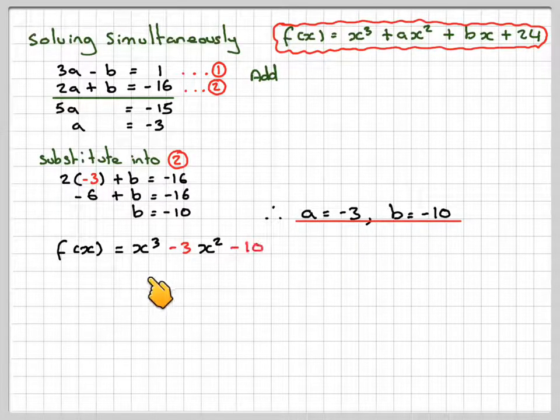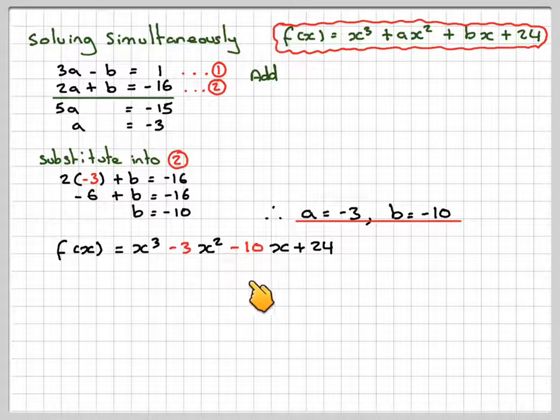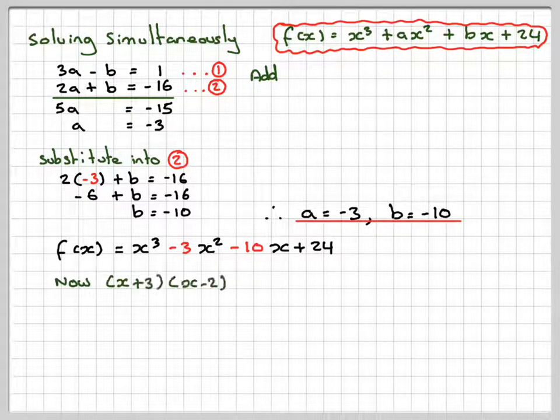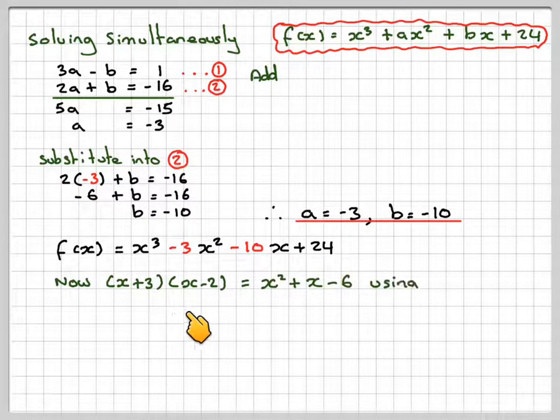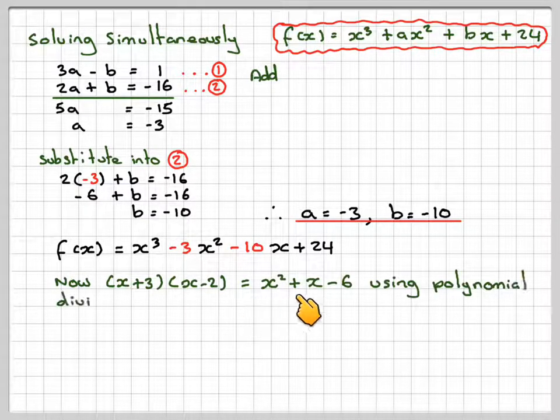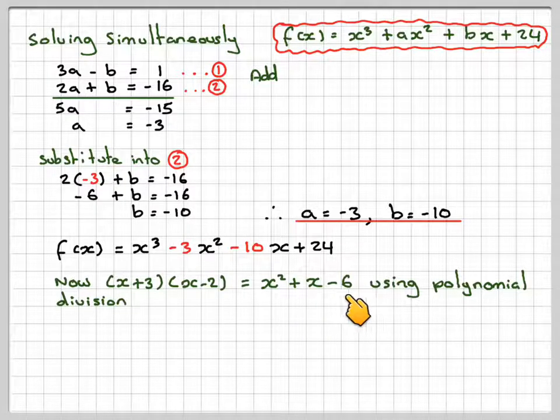Therefore, we've got f(x) = x³ - 3x² - 10x + 24. Now, if x + 3 and x - 2 are factors, so that becomes x² + x - 6. If we use polynomial division into that, we might be able to find the other linear factor.